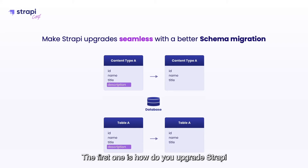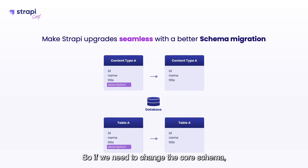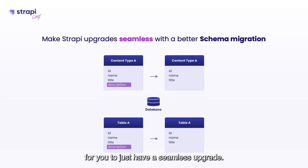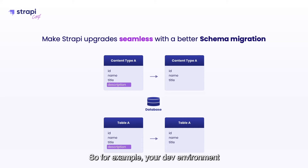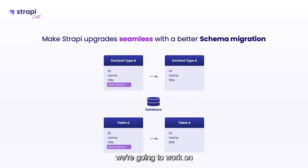There are two important points on migration. The first is how you upgrade Strapi from one version to another — if we need to change the core schema, we have to have a great migration system for a seamless upgrade. But there is also another goal: migrating from one environment to another, for example from your dev environment to your production environment. We are going to work on making the migration story a lot better for you.